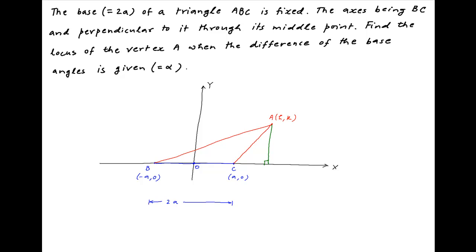Now drop a perpendicular from point A onto the x-axis and let the foot of the perpendicular be the point N. The vertical distance of point A from the x-axis is equal to k, and the horizontal distance of point A from the y-axis is equal to h. Since the coordinates of point B are (−a, 0), the distance OB is equal to a, and finally distance CN is equal to h minus a.